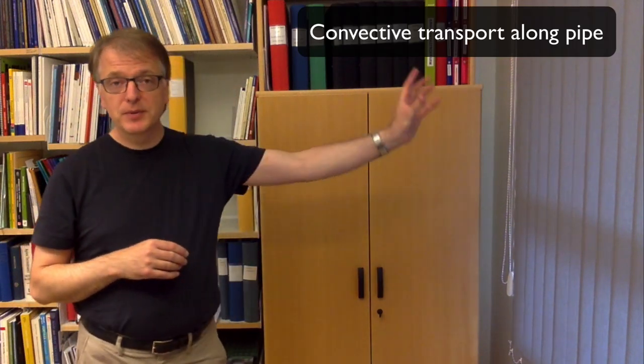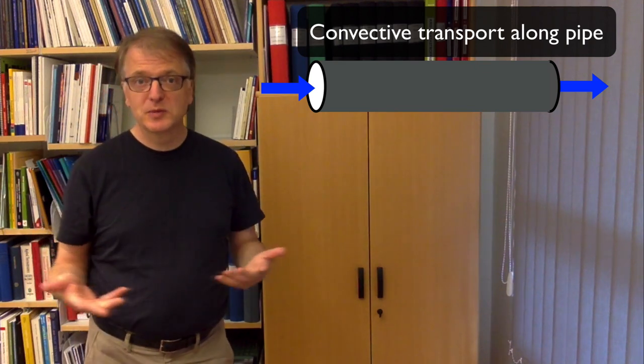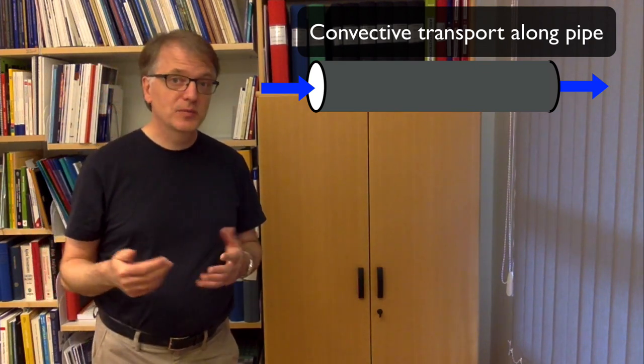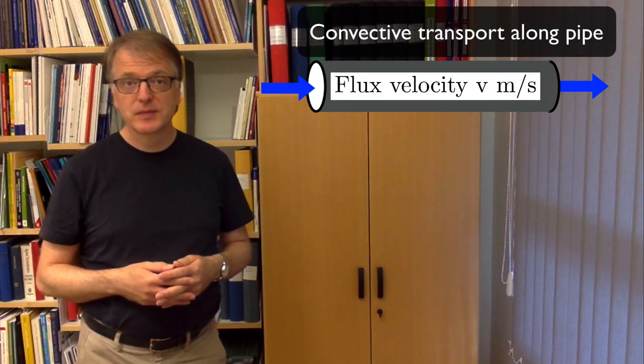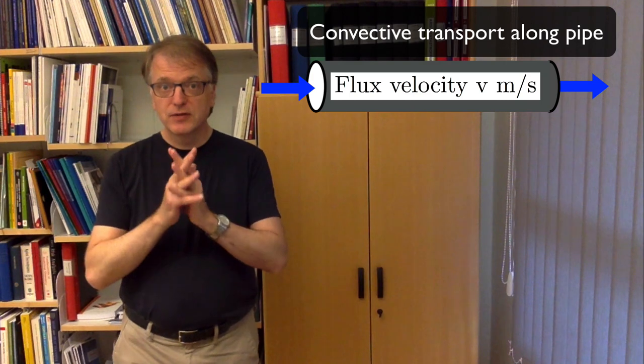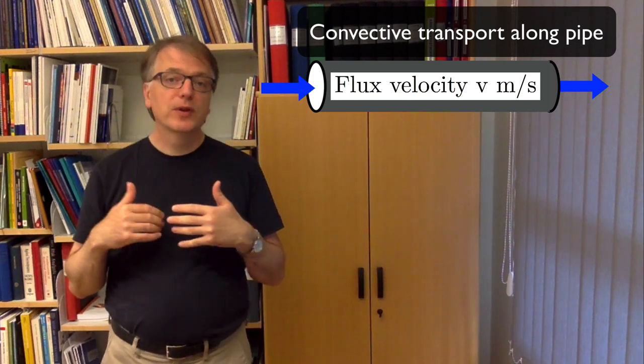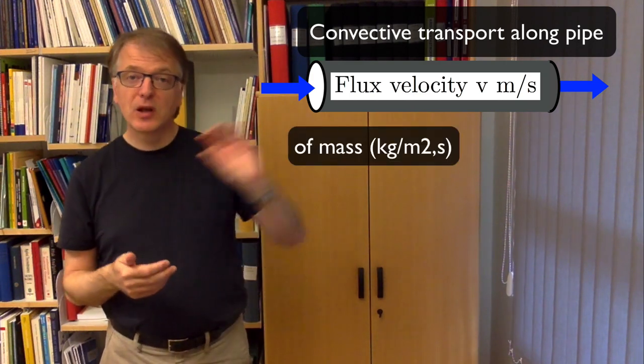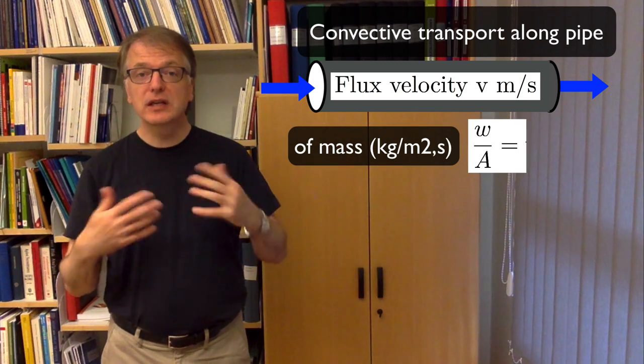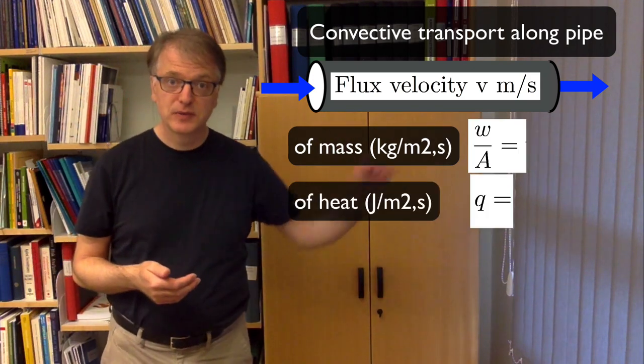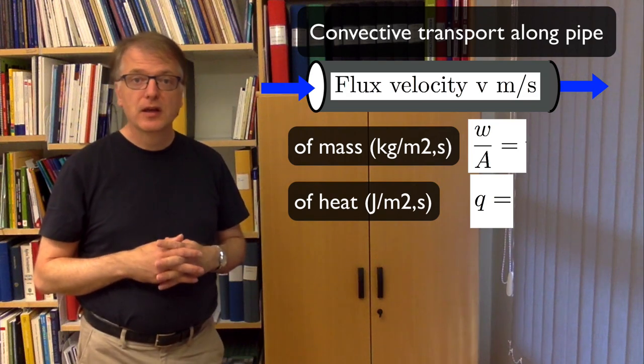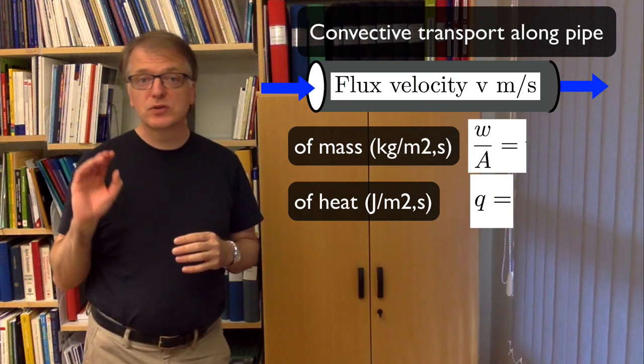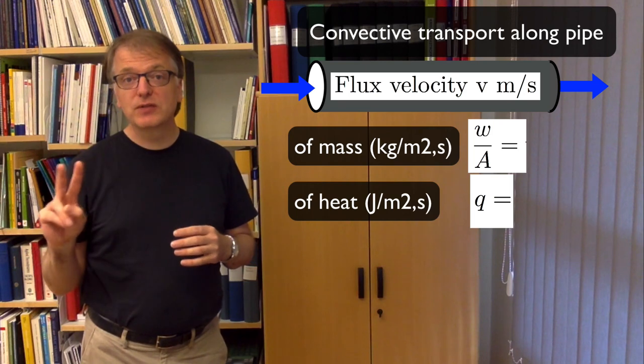Here we have a pipe. Along that pipe we assume that we have some liquid moving and we know the flux velocity, how many meters per second. Now try for yourself to write down what the mass transfer rate will be along the pipe and what the heat transfer will be along the pipe.